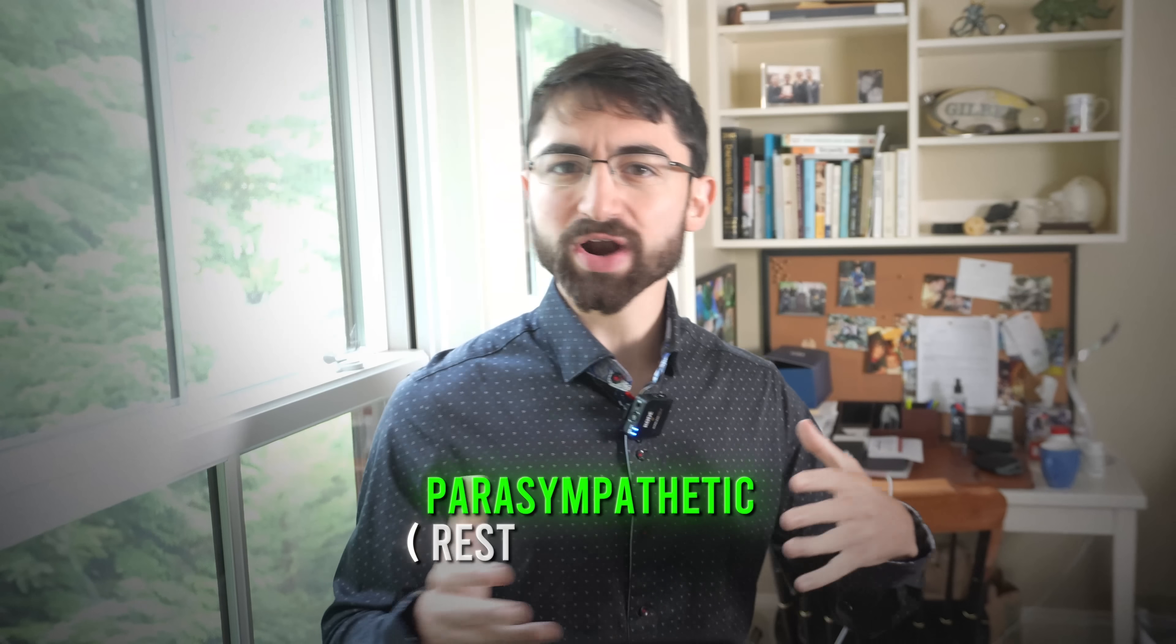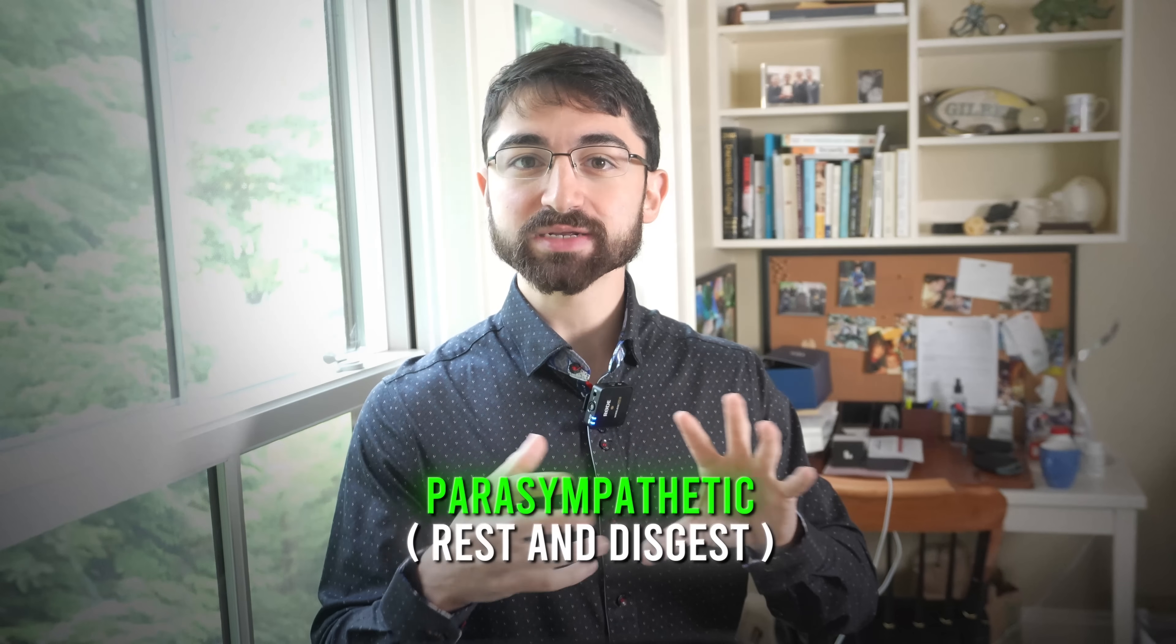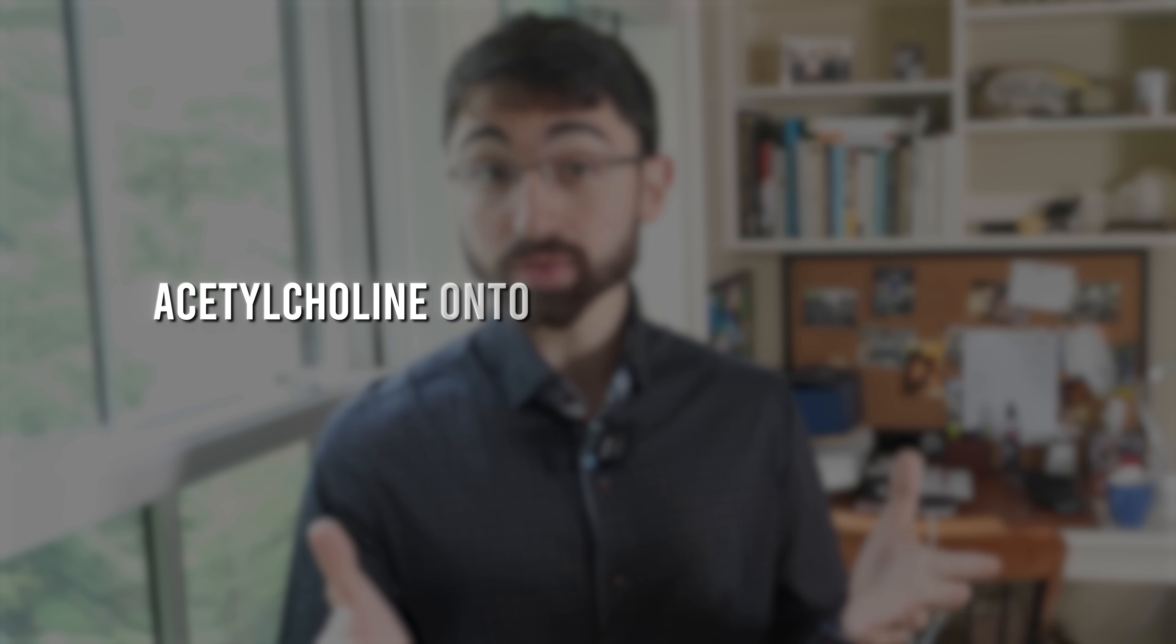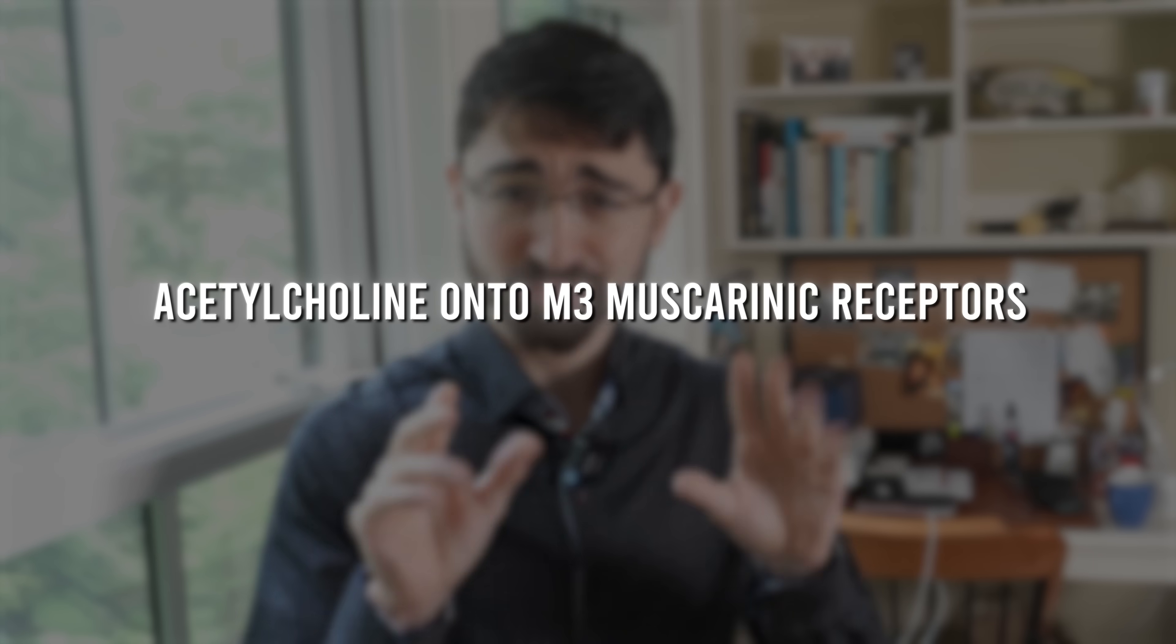But now the vagus nerve, what is it? It's involved in parasympathetic rest and digest nervous system activity. This is in contrast to the sympathetic fight or flight branch of the autonomic nervous system. So high level, we start to form this picture whereby calming, vagal, parasympathetic rest and digest nervous system activity activates Bruner's glands. And if you want specifics, it's through releasing acetylcholine, a neurotransmitter onto M3 muscarinic receptors. But this increases mucin production from Bruner's glands to feed and proliferate Lactobacillus.